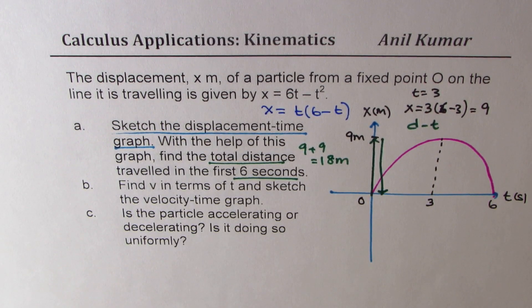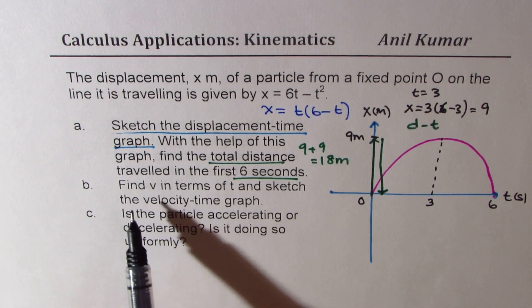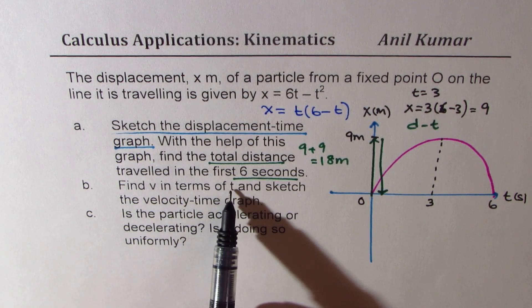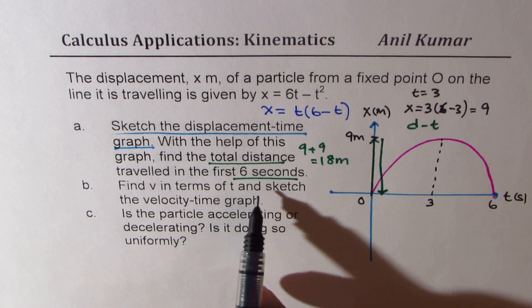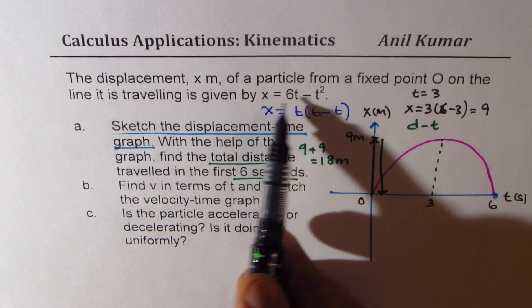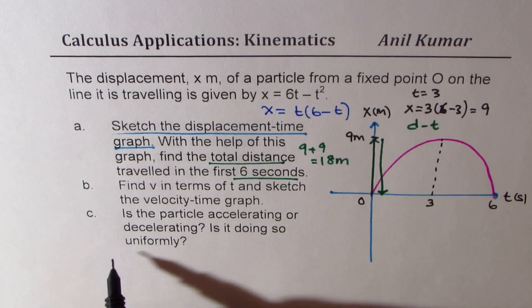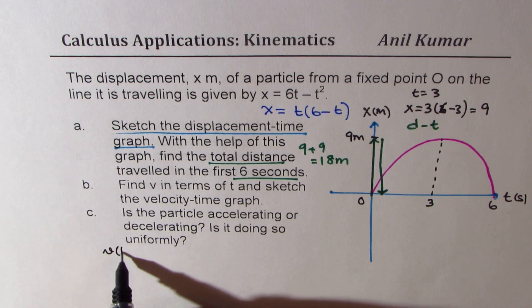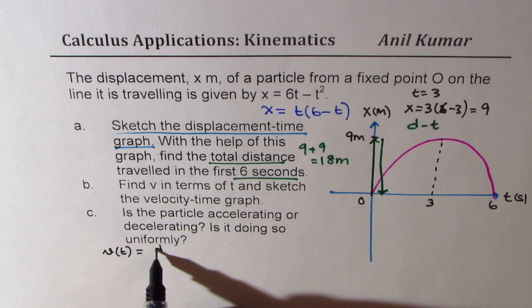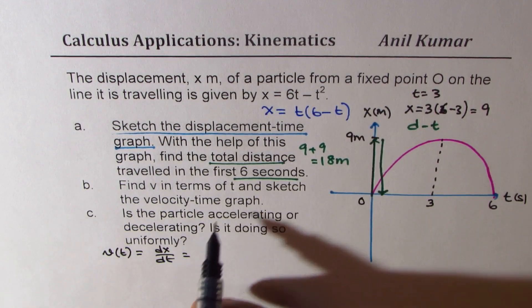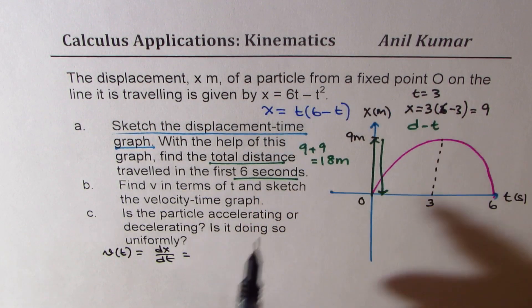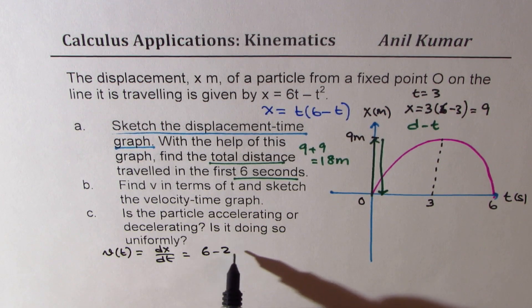Now let's look into part b. Find v in terms of t and sketch velocity time graph. So to find v, I have to differentiate the displacement function. So v, let's say v of t is dx dt.